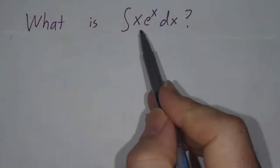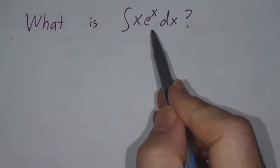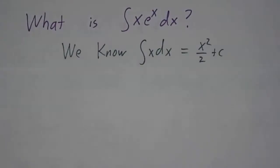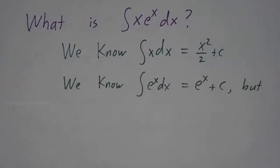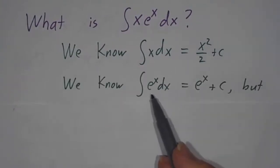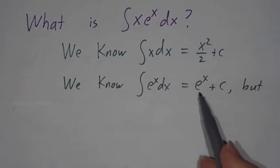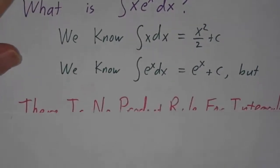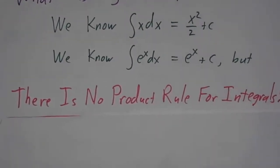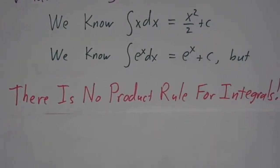Suppose we want to figure out the integral of x times e to the x dx. We know what the integral of x is — that's x squared over 2 plus a constant. And we know that the integral of e to the x dx is e to the x plus a constant. So all we need is a product rule for integrals, but there is none. There is no product rule for integrals.